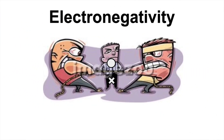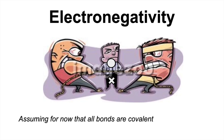In this video, I'm going to introduce the topic of electronegativity. It's really important that you're aware of this topic before you start things like oxidation number and bonding. For the start of the video, I'm going to assume that all bonds are covalent. Obviously they're not, but we're going to lead up to how electronegativity is linked to different types of bonding.